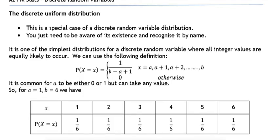And for the final video of lesson one, we're just looking at a special case of a probability of a discrete random variable, which is the discrete uniform distribution.